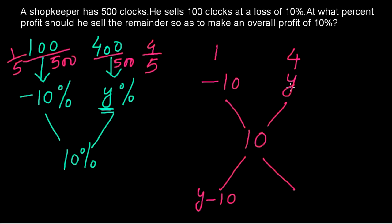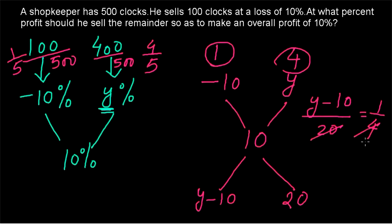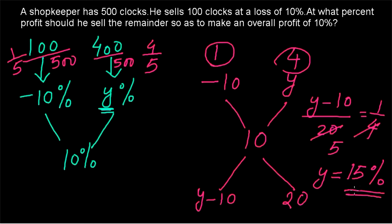Y should obviously be greater than 10, since Y is combined with minus 10 to give a mean of 10. So the difference is Y minus 10, and the difference between 10 and minus 10 is 20. The formula gives: (Y − 10) / 20 = 1 / 4. Cancelling, Y minus 10 equals 5, so Y equals 15%. The remainder should be sold at 15% profit. Thank you for watching.